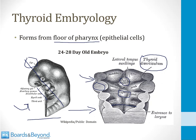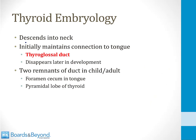As that tissue from the pharynx descends into the neck, it will initially maintain its connection to the tongue. This is a structure called the thyroglossal duct, which disappears later in development. In the adult, two remnants of the thyroglossal duct can be found. The first is called the foramen cecum in the tongue, which I'll show you in a moment.